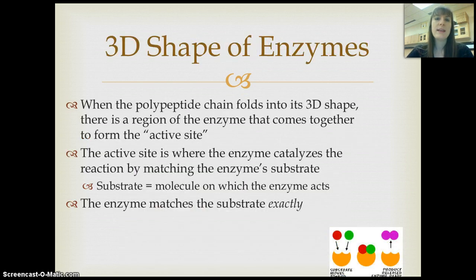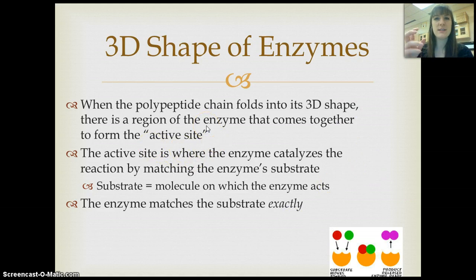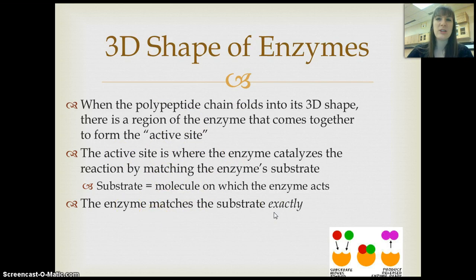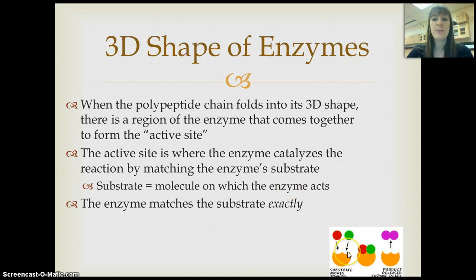The 3D shape of enzymes is incredibly important in their job. There's a part of the 3D shape that actually attaches to the substrate — whatever the reactant is going through the reaction — called the active site. When the active site attaches to the substrate, it allows the reaction to occur faster. The enzyme and the substrate have to match exactly in order for the reaction to occur, illustrated here where the substrate fits into rounded shapes within the enzyme.